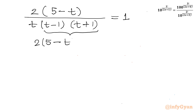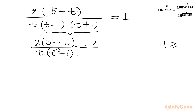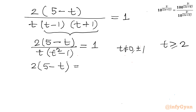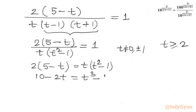Using the difference of two squares, t(t-1)(t+1) = t(t²-1). So we have 2(5-t) divided by t(t²-1) equal to 1. Cross multiplying gives 2(5-t) = t(t²-1), which expands to 10 - 2t = t³ - t. Bringing all terms to one side: t³ + t - 10 = 0.